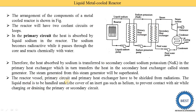The reactor vessel, primary circuit, and primary heat exchanger must be shielded from radiation, as the fuel and the sodium coolant passing through the reactor are radioactive materials. Additionally, liquid metals must be handled under cover of an inert gas such as helium to prevent contact with air when charging or draining the primary or secondary circuits.